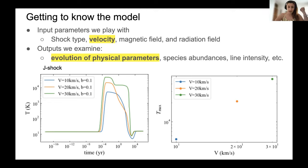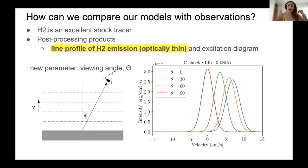Of course, when you're modeling something, the most important part is how to compare these models with observations. And Tram and Sylvie showed us two ways that we could do this with some post-processing products from the Paris-Durham shock code.